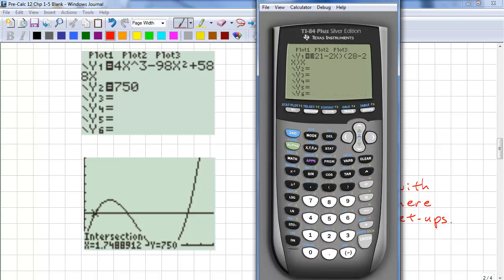So we go back to y equals. And we enter 750. And graph. Okay, so we have two solutions. One here and one here.